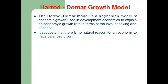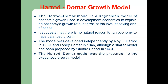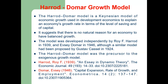It suggests that there is no natural reason for an economy to have balanced growth. This model was developed independently by Harrod in 1939 and Domar in 1946, although a similar model had also been proposed by Gustav Cassel in 1924. The Harrod-Domar model was the precursor to the exogenous growth model. Harrod wrote a paper, 'An Essay in Dynamic Theory,' in the Economic Journal, volume 49, and Domar's paper is 'Capital Expansion, Rate of Growth and Employment,' published in Econometrica, volume 14, number 2.